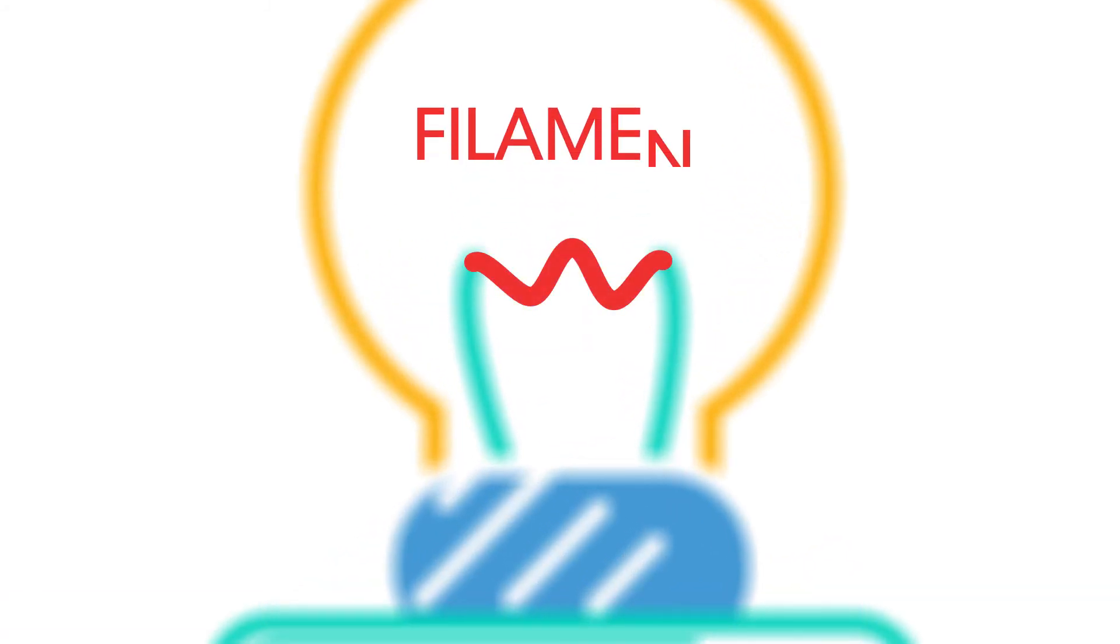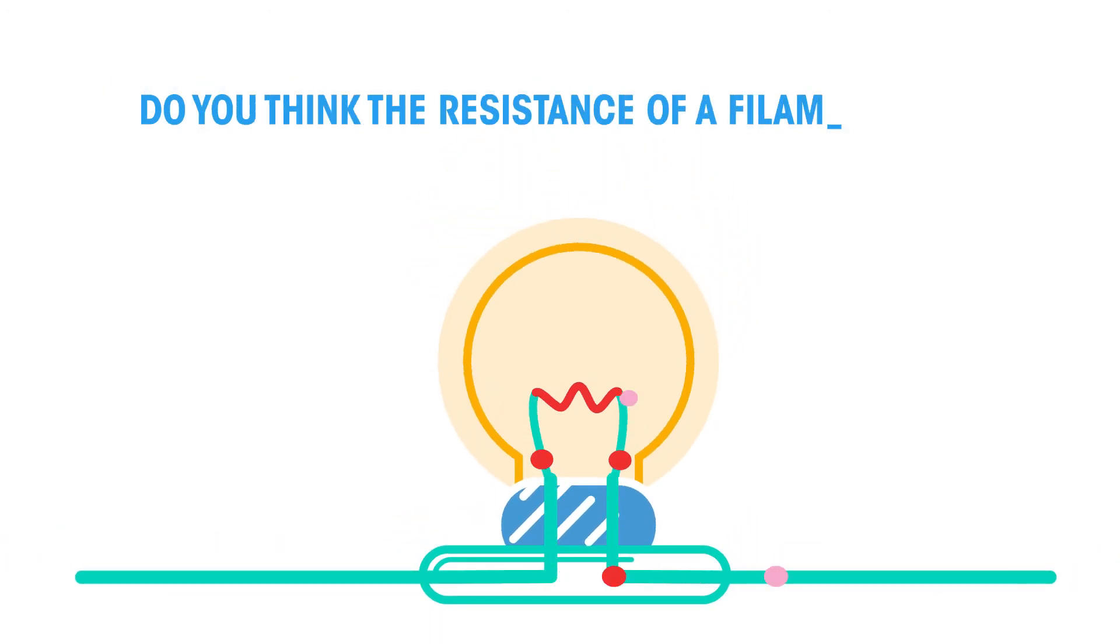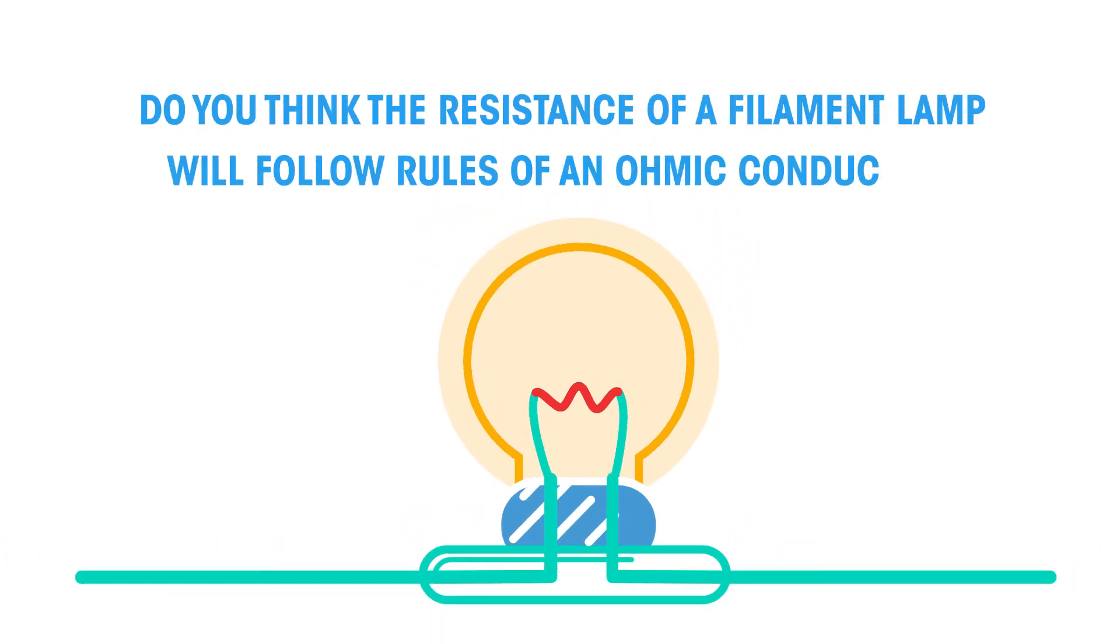A filament bulb contains a thin coil of wire called the filament. This heats up when an electric current passes through it and produces light as a result. Do you think the resistance of a filament lamp will follow the rules of an ohmic conductor? Why? Pause the video while you think.